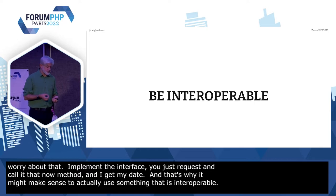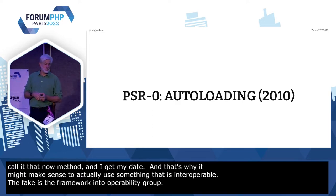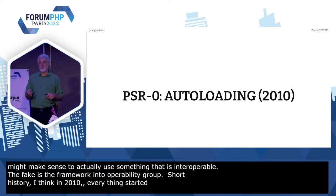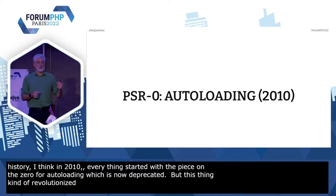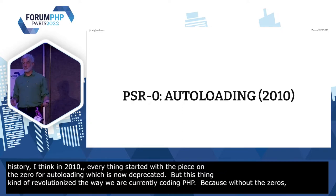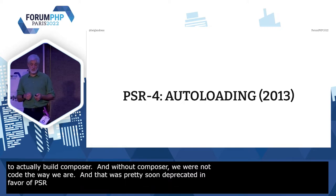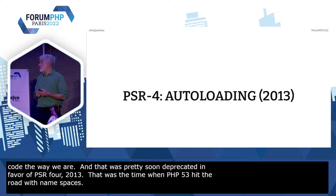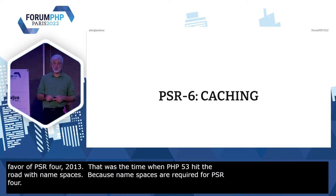The FIG is a Framework Interoperability Group. A short history: in 2010 everything started with PSR-0 for autoloading, which by now is deprecated. But this revolutionized the way we code PHP, because without PSR-0 there would have been no possibility to build Composer. And without Composer we wouldn't be coding the way we are. PSR-0 was then deprecated in favor of PSR-4 in 2013, when PHP 5.3 hit the road with namespaces — because namespaces are required for PSR-4. Another one you might know is PSR-3 for logging. And we also have PSR-6 for caching, for example.